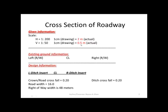That is very important for plotting. When we look at existing ground information, we need the left right-of-way and the right right-of-way limits, their elevations, and the centerline elevation — this is given information. For design information, we need to either calculate or be given the left and right ditch invert and the centerline. Some other information we need is the road cross-fall, also known as the crown in some cases.